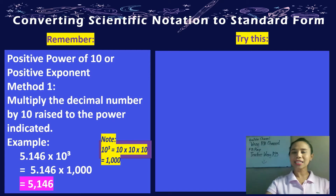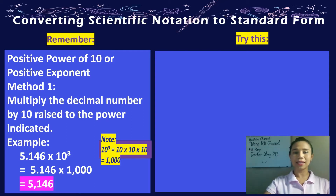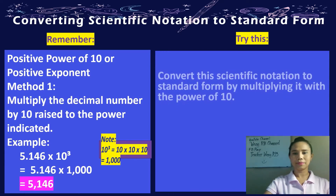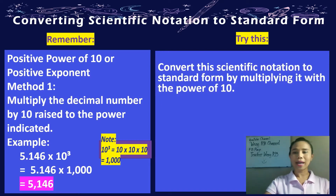Converting scientific notation to standard form when dealing with positive power of 10 or positive exponent means you have to multiply the decimal number by 10 raised to the power indicated. So take a look at the example I have given so that you could also try this example. Now it's your turn — convert the scientific notation to standard form by multiplying it with the power of 10.